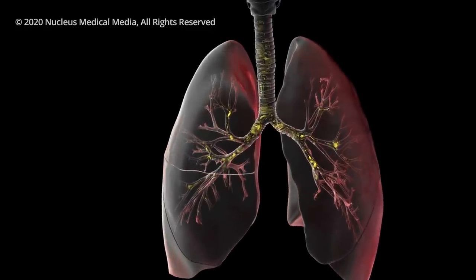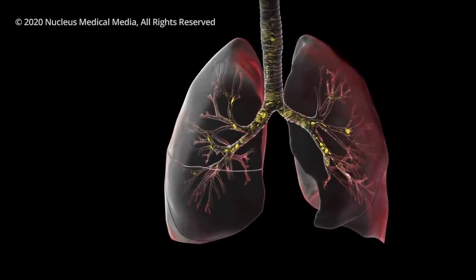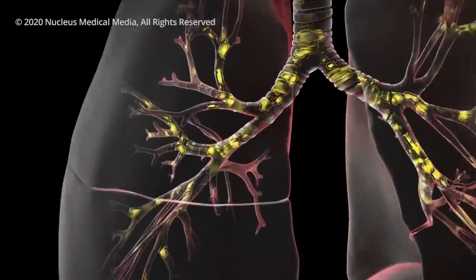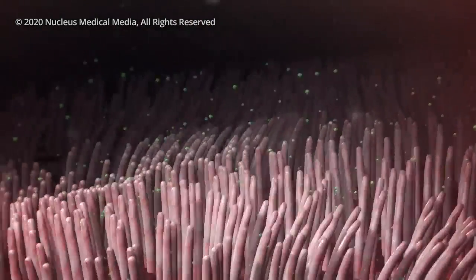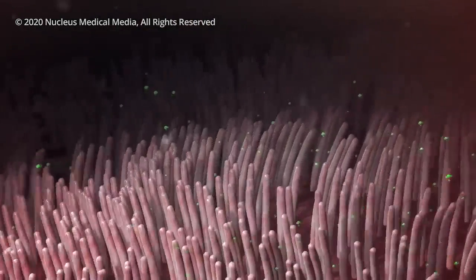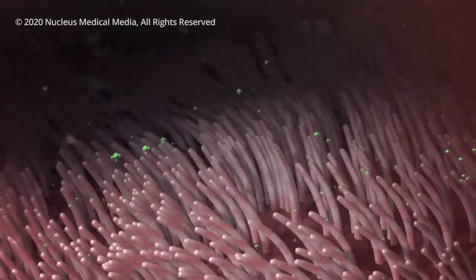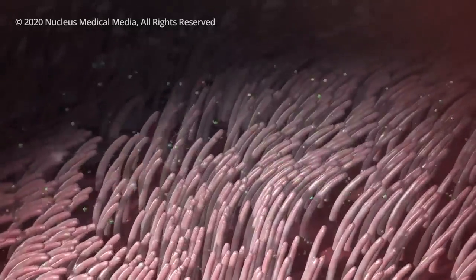Your airways catch most germs in the mucus that lines your trachea, bronchi, and bronchioles. In a healthy body, hair-like cilia lining the tubes constantly push the mucus and germs out of your airways where you might expel them by coughing.